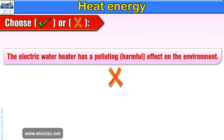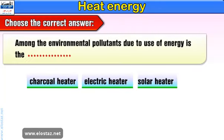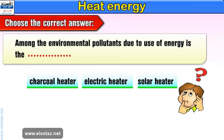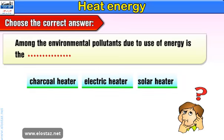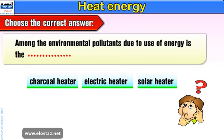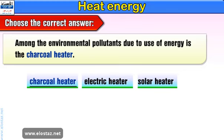Choose true or false: The electric water heater has a polluting harmful effect on the environment. Well done — It's false. Choose the correct answer: Among the environmental pollutants due to use of energy, which is it — the charcoal heater, electric heater, or solar heater? Very good — The charcoal heater.